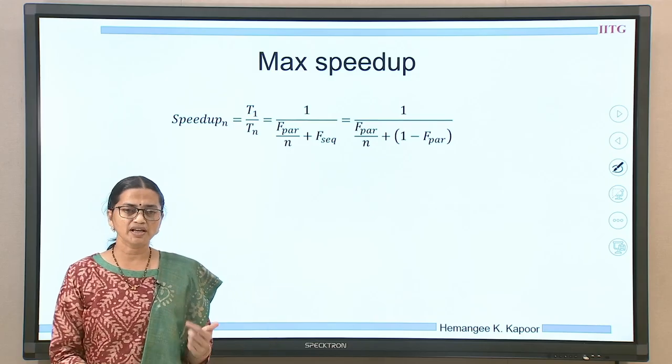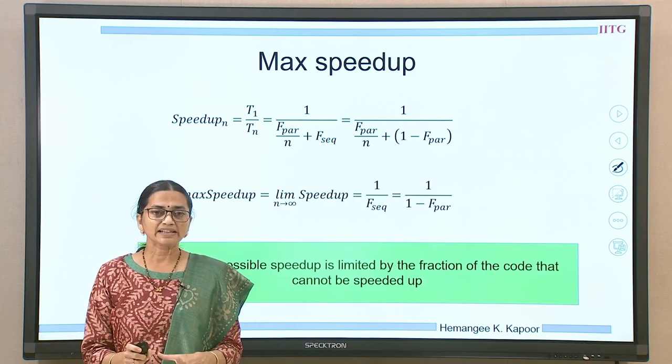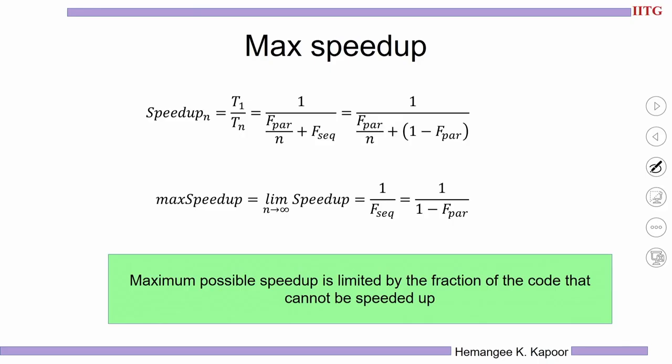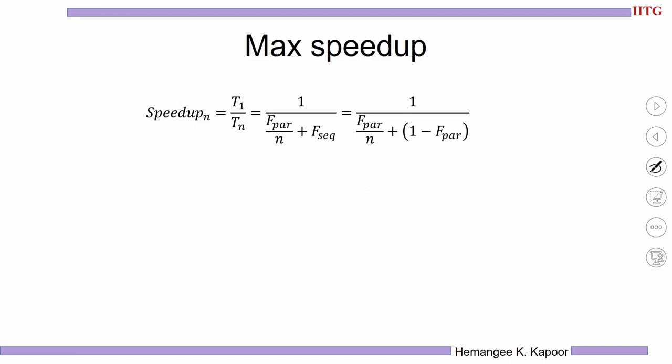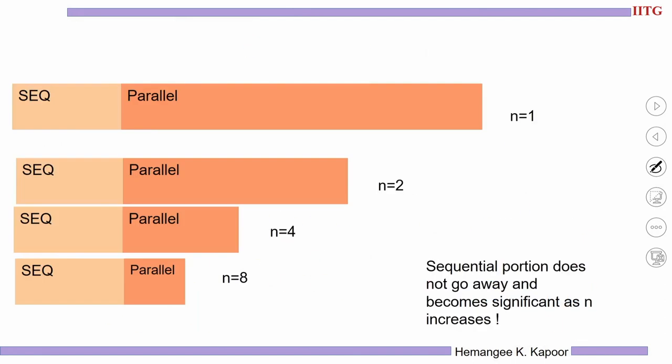The maximum possible speedup is limited by the portion which cannot be parallelized — that is F_sequential. The sequential fraction is going to limit the amount of speedup you are able to achieve, which was also visible in the pictorial representation. The orange portion was getting smaller and smaller but the light orange portion remained the same, and that is what limited the maximum speedup.